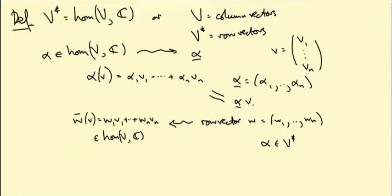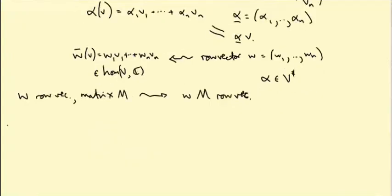So how do I define the dual representation? Well if I have a row vector W and a matrix M, I get a new row vector W times M. In other words I multiply matrices into row vectors on the right. So here's how I'm going to use this.